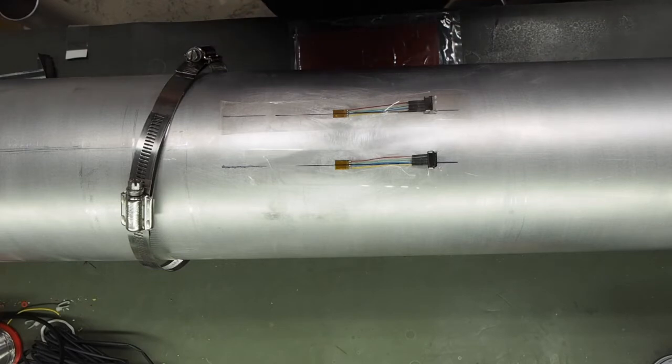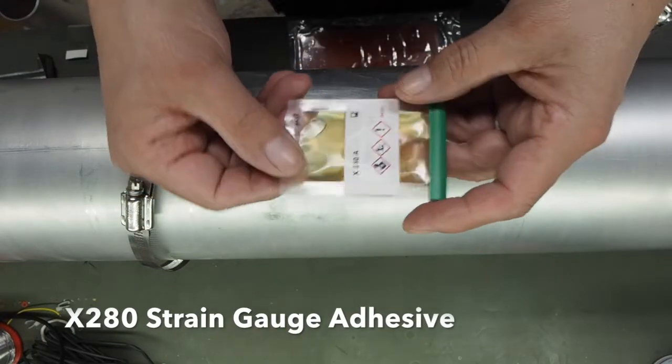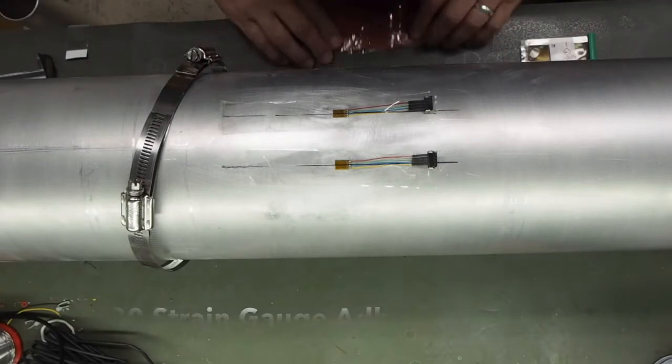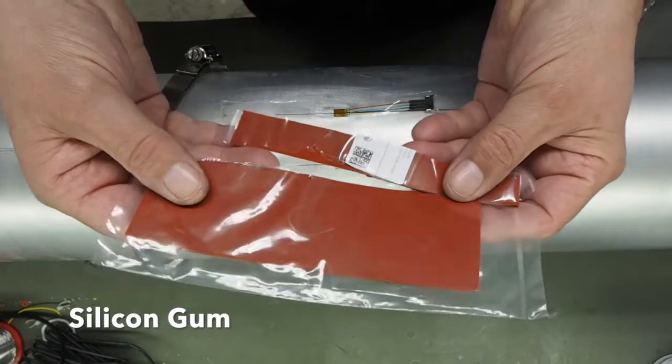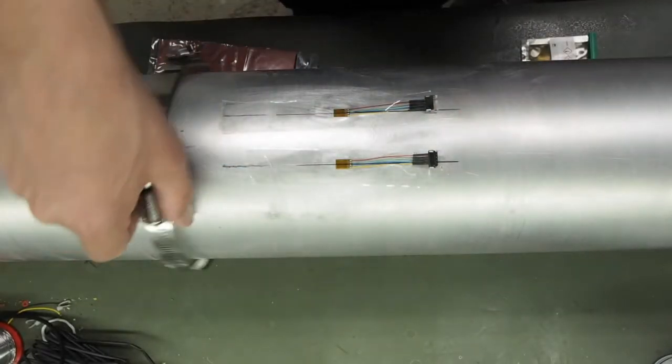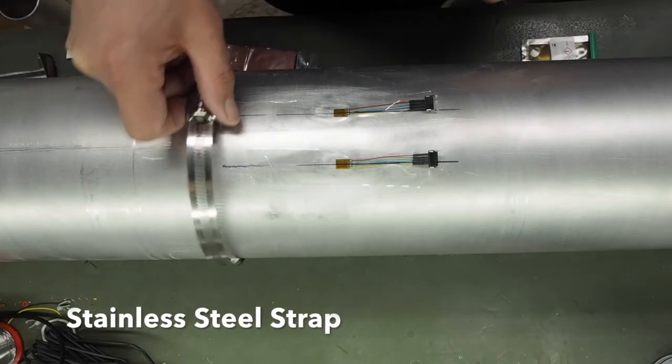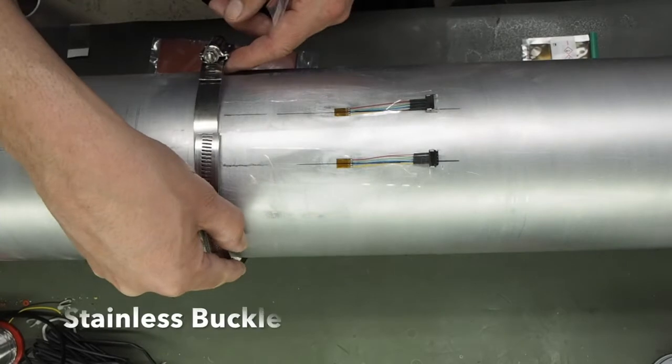For the gluing of the gauges onto the shaft we will need the X280 adhesive, a small strip of silicone gum that's been provided, and the stainless steel strap and buckle.